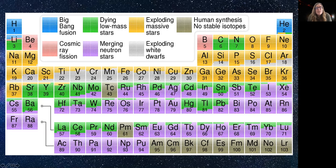This periodic table shows in color where different elements come from. In blue is big bang nucleosynthesis — hydrogen, helium, and a little lithium, present from just after the big bang. The green elements are produced by dying low-mass stars. The exploding massive stars — supernovae — are what we've been talking about, responsible for most of the heavier elements shown here.